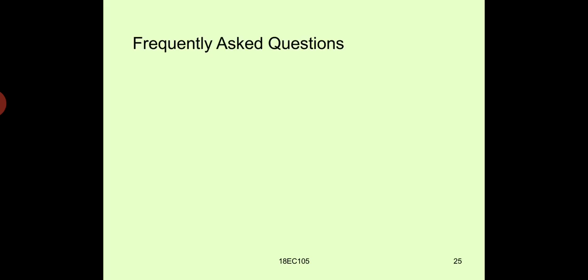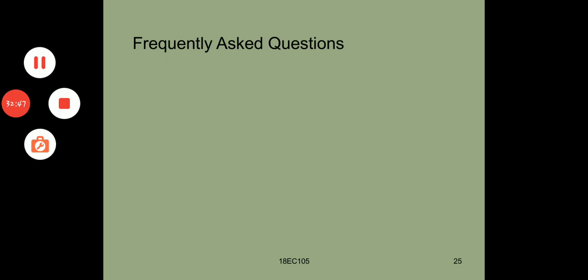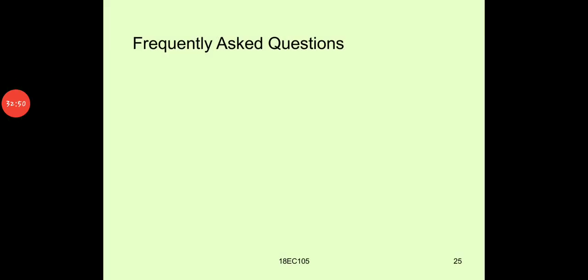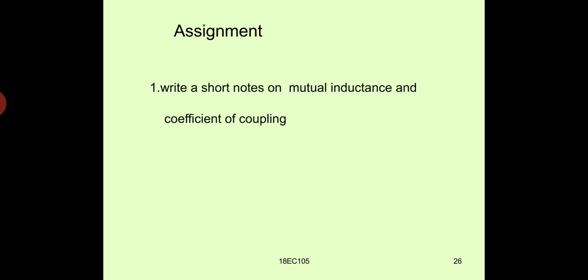Now let us look at some frequently asked questions from the examination point of view. Number one: define mutual inductance. Number two: define coefficient of coupling. We can also think of an assignment question such as: write short notes on mutual inductance and coefficient of coupling. Well, thank you very much. With this, we conclude our session.